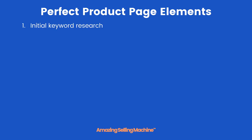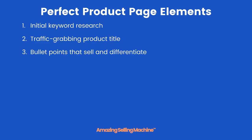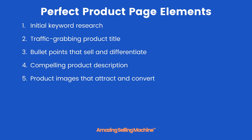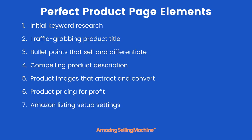One: initial keyword research. Two: a traffic grabbing product title. Three: bullet points that sell and differentiate. Four: a compelling product description. Five: product images that attract and convert. Six: product pricing for profit. Seven: Amazon listing setup settings. And finally eight: automated emails.